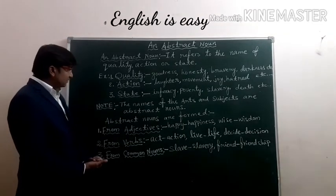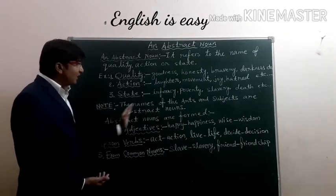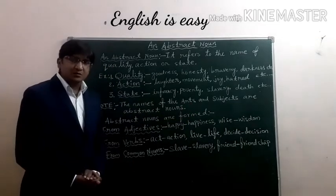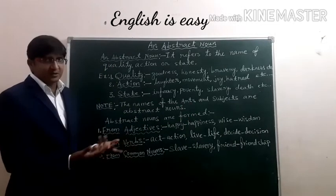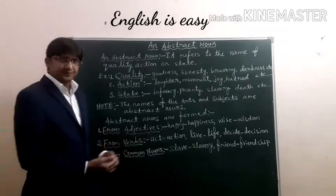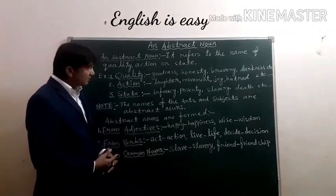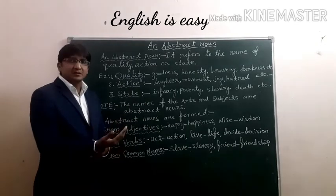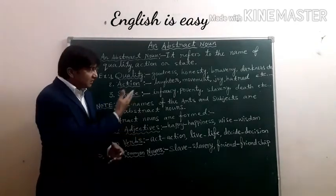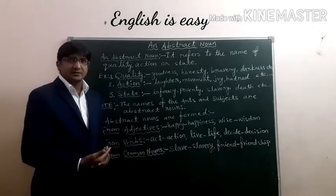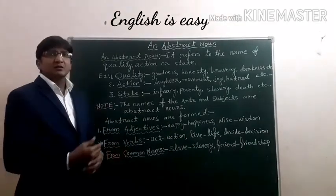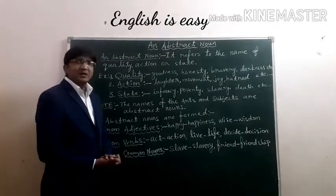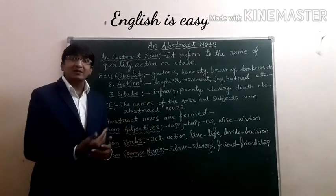There is an important note: the names of arts and subjects are also abstract nouns. Sometimes we have subject names, and those also come under abstract nouns. For example, English, mathematics, or music — music and dance can also be considered abstract nouns.